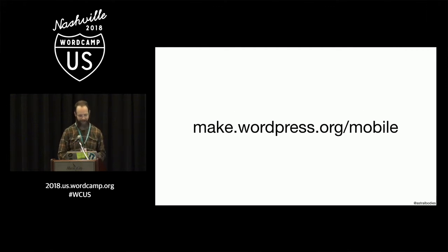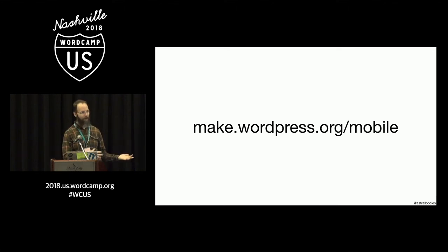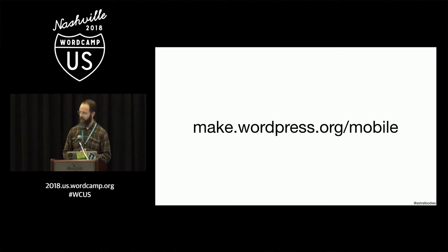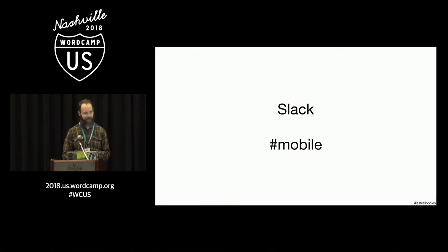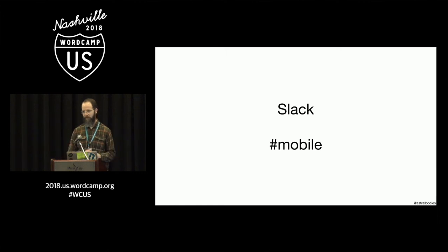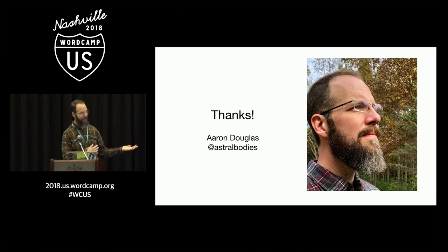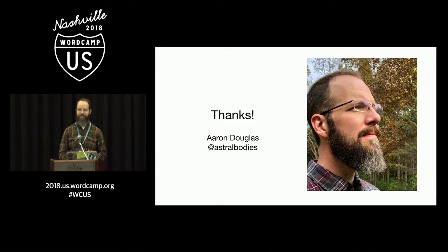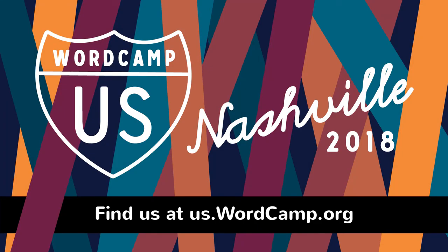We're on make/mobile — that's where we put all of our calls for testing, so if you want to see cool new features coming out for the apps before the release to the app store every two weeks, that's where you'll want to subscribe. We're also in the WordPress.org Slack instance — if you run into anything or have a question or suggestion, plenty of us from the team are always in that room. We welcome everybody's feedback — it's an inclusive environment. And if you want to hit me up, I'm on Twitter and GitHub as AstroBodies. If you see me at lunch, feel free to tap on my shoulder and ask questions. Thanks.